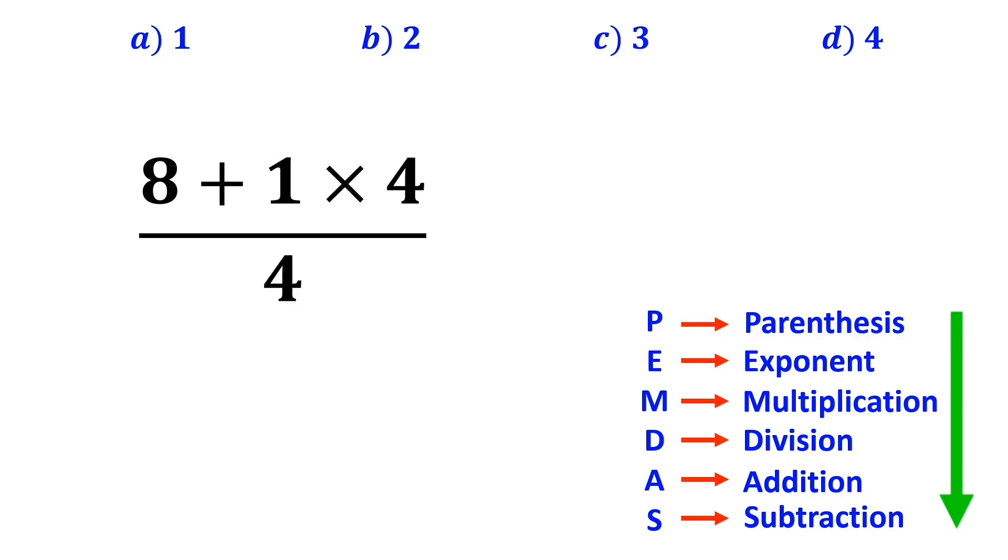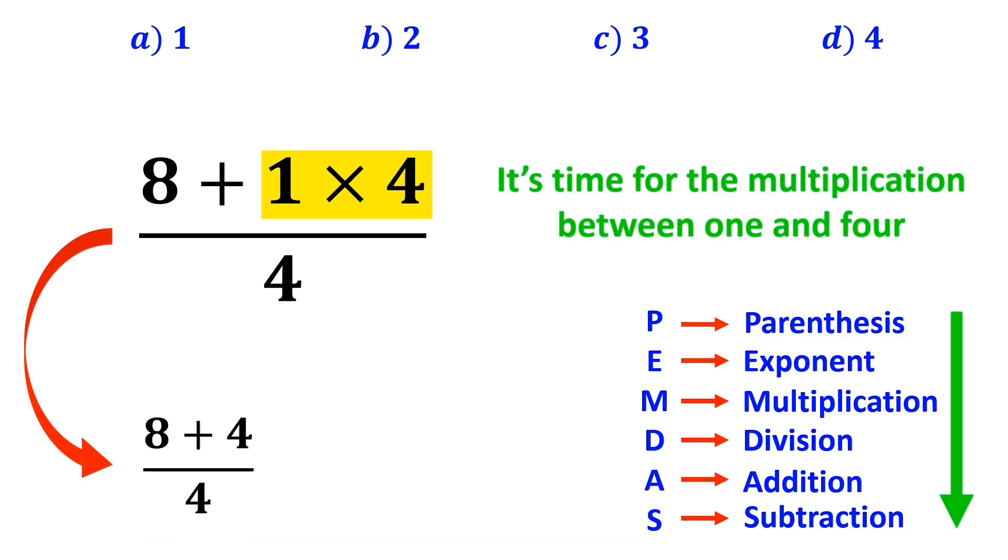In the next step, it's time for the multiplication between 1 and 4, which simplifies the expression to 8 plus 4 over 4.